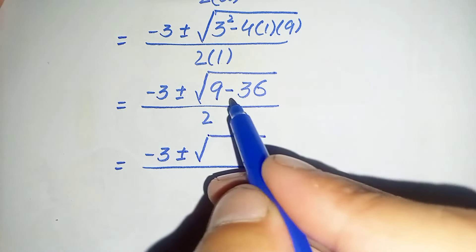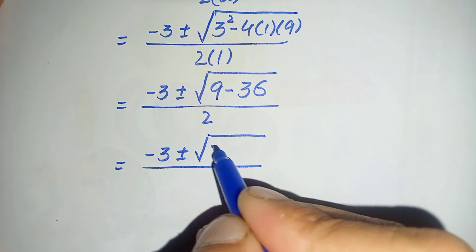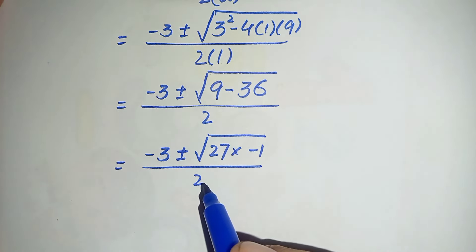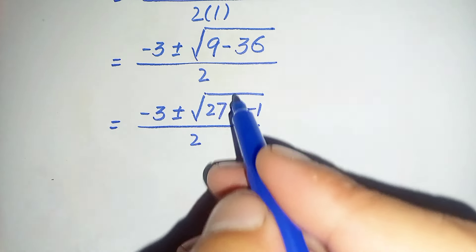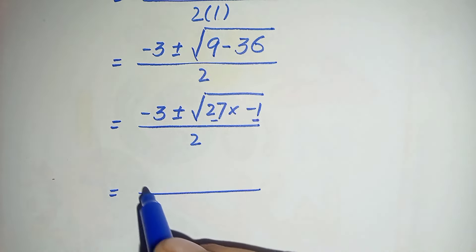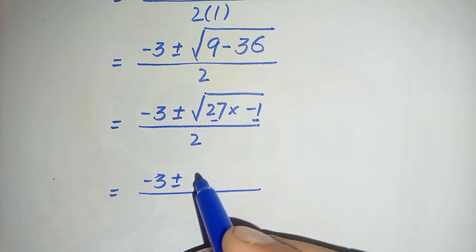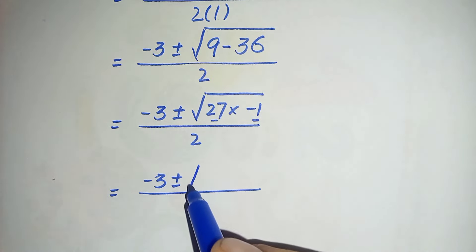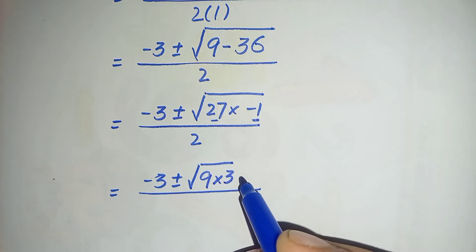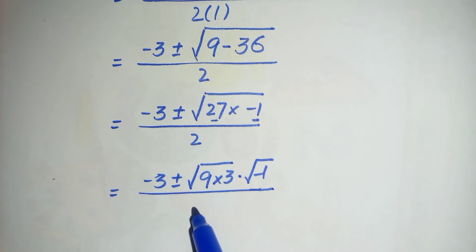Here 9 minus 36 gives us negative 27. We can write negative 27 as 27 times negative 1. Splitting the square root, this becomes square root of 27 times square root of negative 1, divided by 2. We can write square root of 27 as square root of 9 times 3.